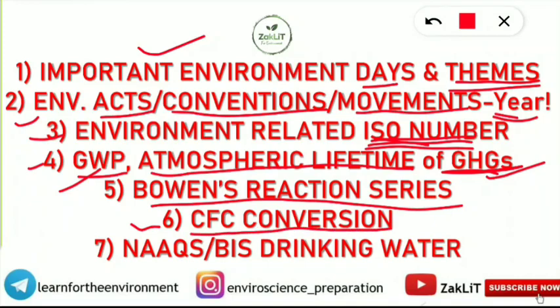The seventh topic is National Ambient Air Quality Standards (NAAQS) and Bureau of Indian Standards (BIS) for Drinking Water. You should know the important elements and their limits under both standards. These are very, very important.